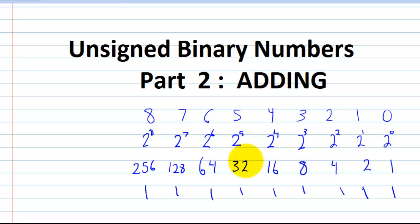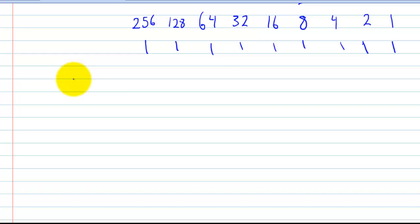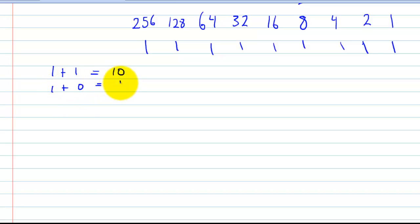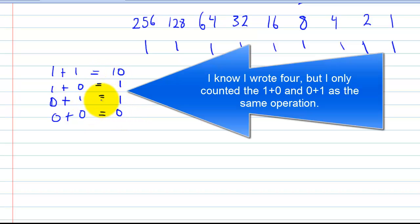So now let's continue with the adding portion. If you still need help with the place values, go watch the first part. When you add binary numbers, there are really only three additions you need to know: one plus one equals one-zero (i.e., zero with a carry of one); one plus zero equals one; zero plus one equals one; and zero plus zero equals zero. Those are the only additions you need to add binary numbers.